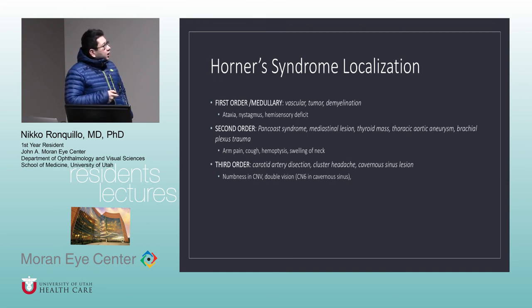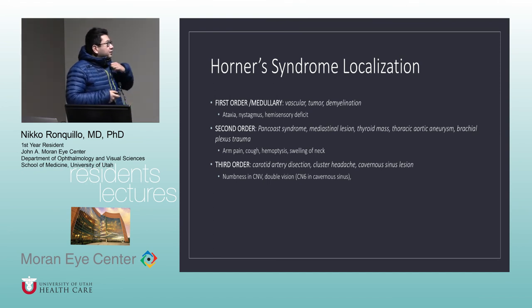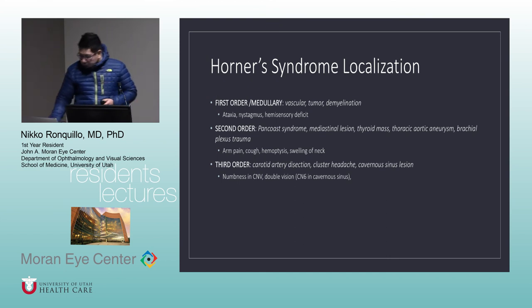Causes of Horner's syndrome by neuron order: First-order causes include vascular problems, tumors, and demyelination, with associated symptoms of ataxia, nystagmus, and hemisensory defect. Second-order causes include Pancoast tumors, mediastinal lesions, thyroid mass, thoracic aortic aneurysms, and brachial plexus trauma, with associated arm pain, cough, hemoptysis, and neck swelling. Third-order causes include carotid artery dissection, cluster headache, and cavernous sinus lesions, with associated cranial nerve V numbness and diplopia.